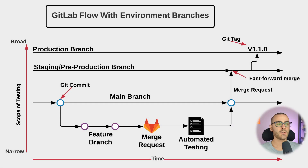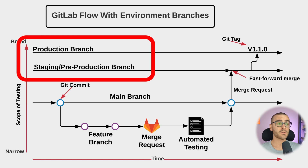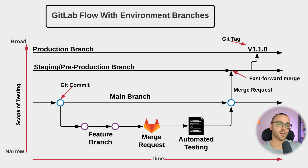So now let's get started. Here is a graphical representation of the GitLab flow, and there are actually two versions. The one we're looking at here uses long-lived environment branches. From the very first commit of the Git repository, you would branch off into these long-lived environment branches, and each environment branch represents an environment in which your codebase or software is deployed.